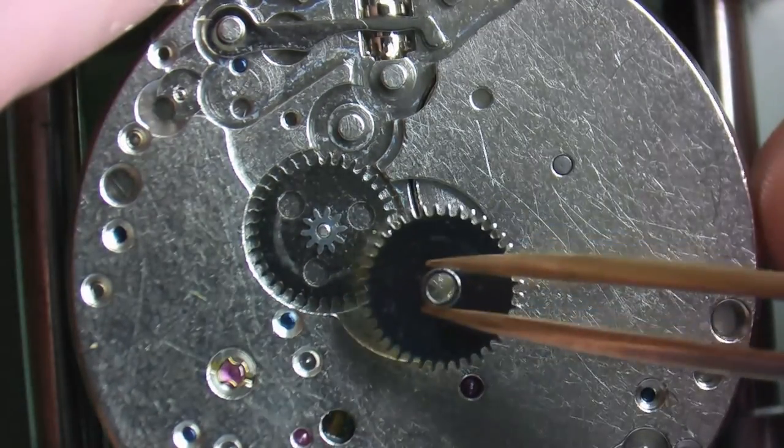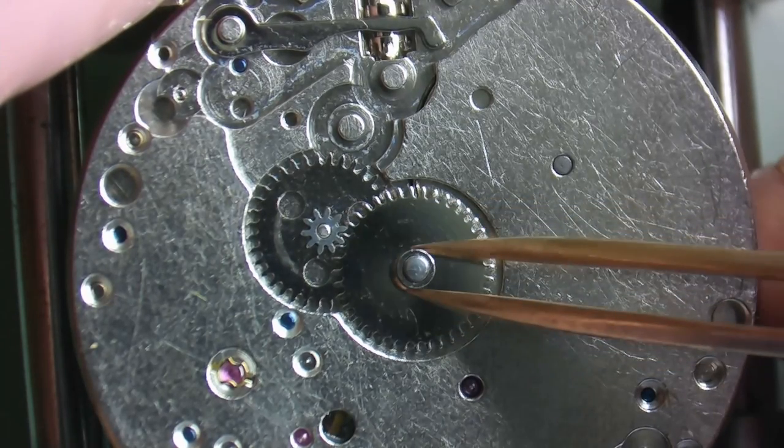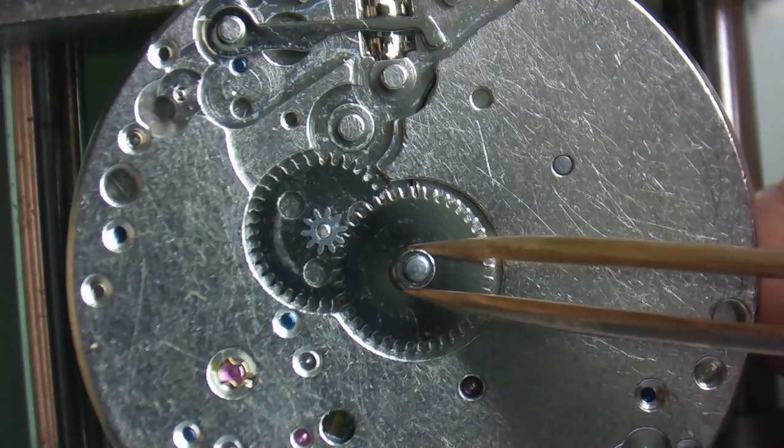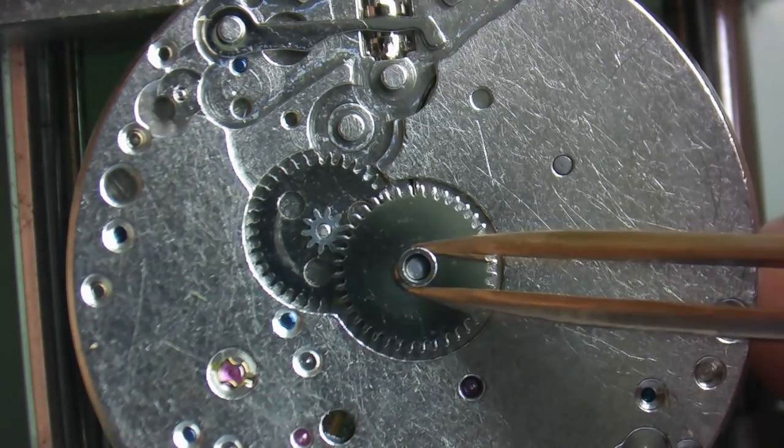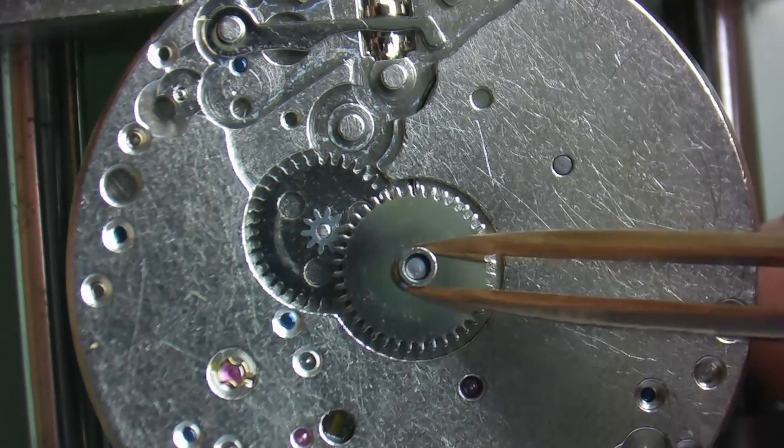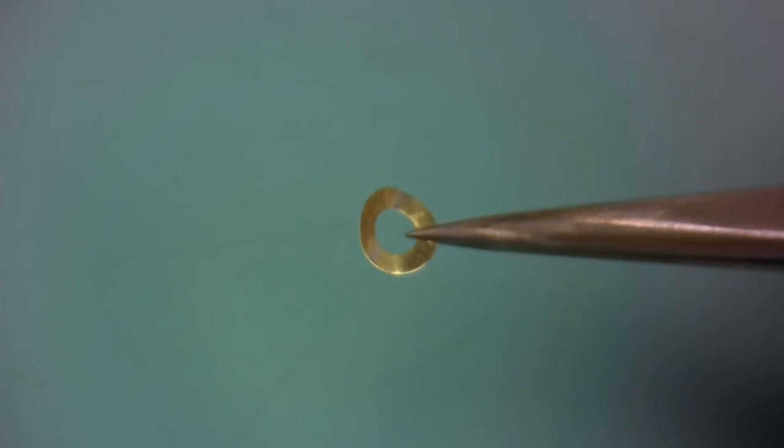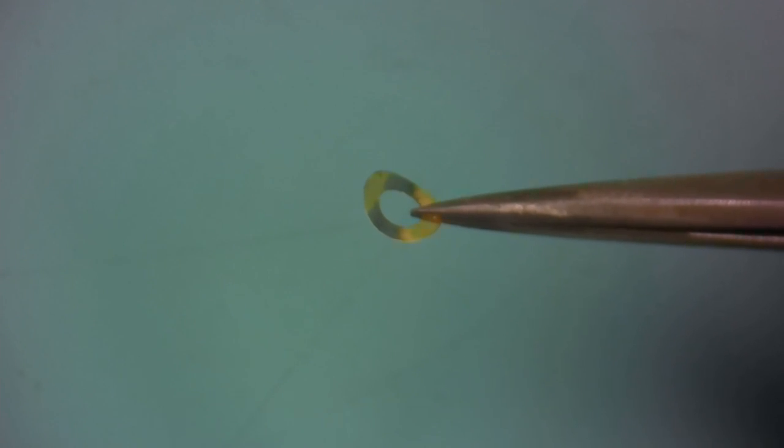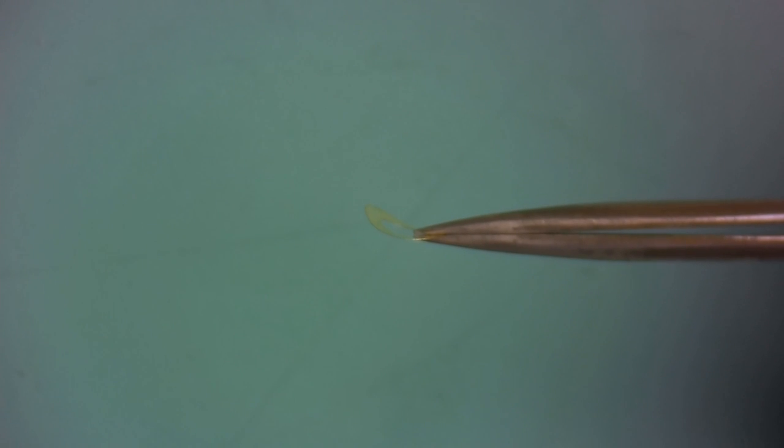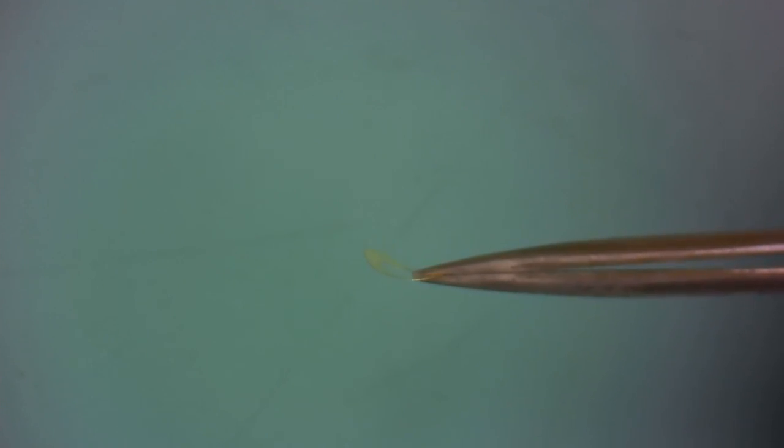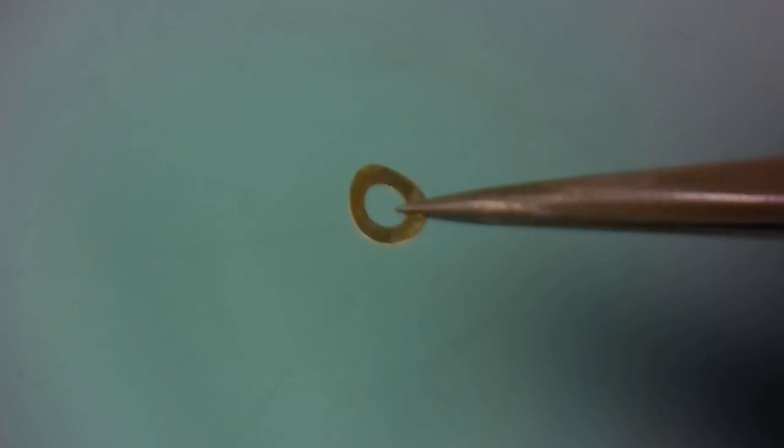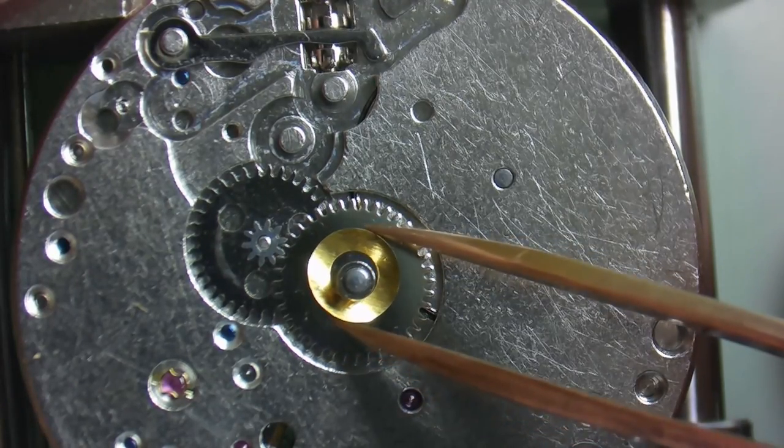Our next part is the hour wheel. Now the hour wheel is also made up of a pipe and a wheel. This pipe is where the hour hand gets pressed onto. Now you'll notice that the hour wheel free floats on the cannon pinion which would be turning inside the pipe. To help keep the hour wheel pressed down into its position, we use a dial washer. The dial washer has a slight curve in it which applies tension between the hour wheel and the underside of the dial to keep the hour wheel from coming out of its position. Now this is going to be true in most cases unless the hour wheel is actually held down in place by some sort of plate. Dial washers are pretty common in movements and the dial washer just fits right on top of the hour wheel just like that.